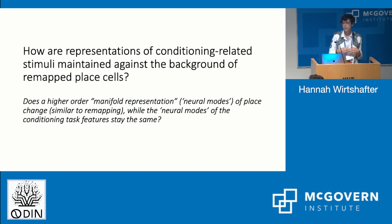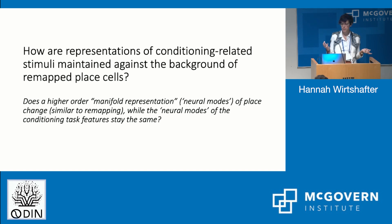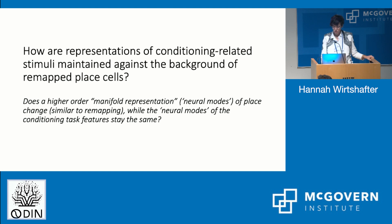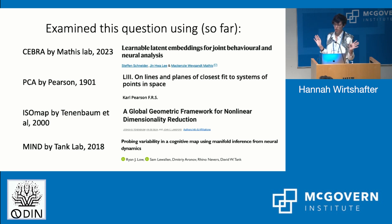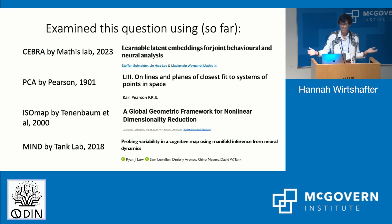I think this is a really interesting question that should be tackled at the population level. The hypothesis I had originally going into this experiment was: do you have some type of higher-order manifold representation of place, which changes as the animal goes between environments, while you have a different kind of higher-order neural representation of the task that stays the same? I'm in the process — again, very preliminary — of tackling this question from a bunch of different angles. We're very privileged to be here where three out of four of the techniques I'll discuss were developed by people either in the room or in the building.